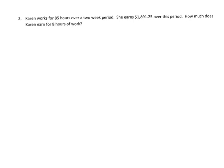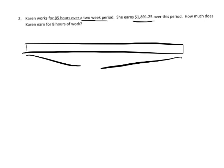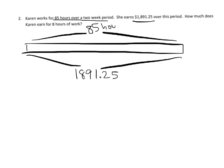Karen works 85 hours over a two-week period and earns $1,891.25. The question is: how much does Karen earn for eight hours of work? This takes a couple of steps. I'm going to think of the whole bar as representing $1,891.25, also representing the 85 hours. We want to know how much one hour is worth, so we're going to divide 1891.25 by 85.